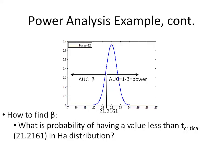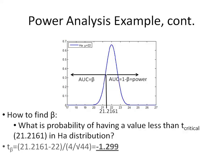So how do we find beta? We want to find the power, so we have to find beta and then do 1 minus that. It's simply asking what is the probability of having a value less than the t-critical value in our specific alternate hypothesis distribution. We calculate the t-statistic: (21.2161 minus 22) over (4 over the square root of 44), which gives us negative 1.299.